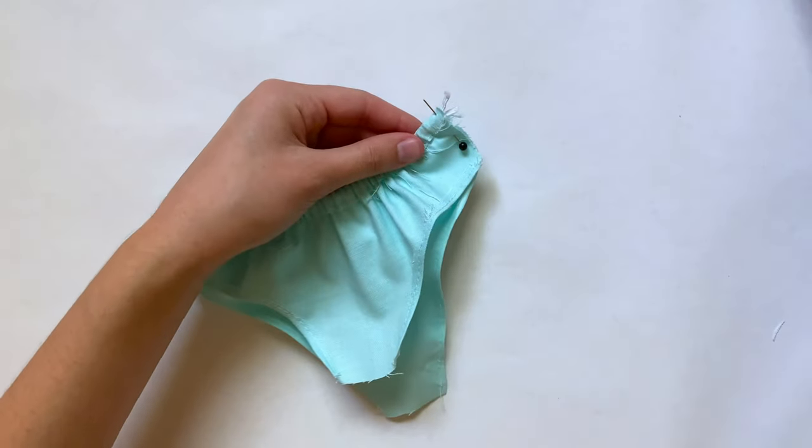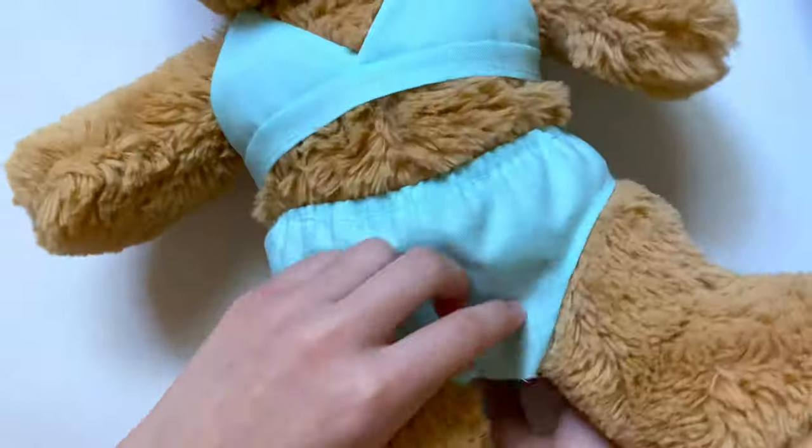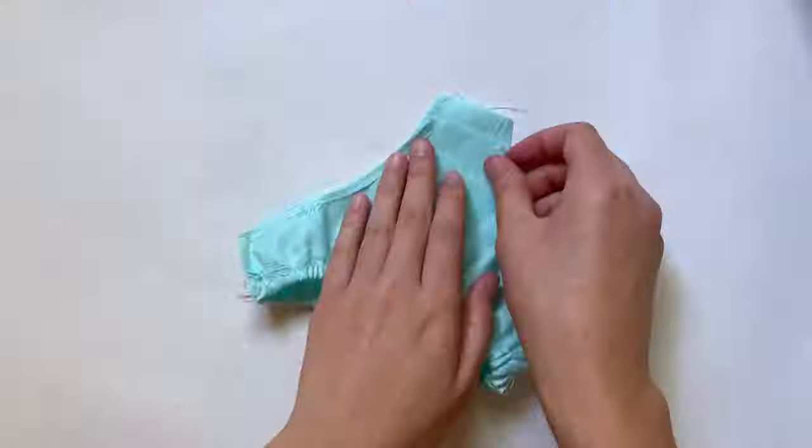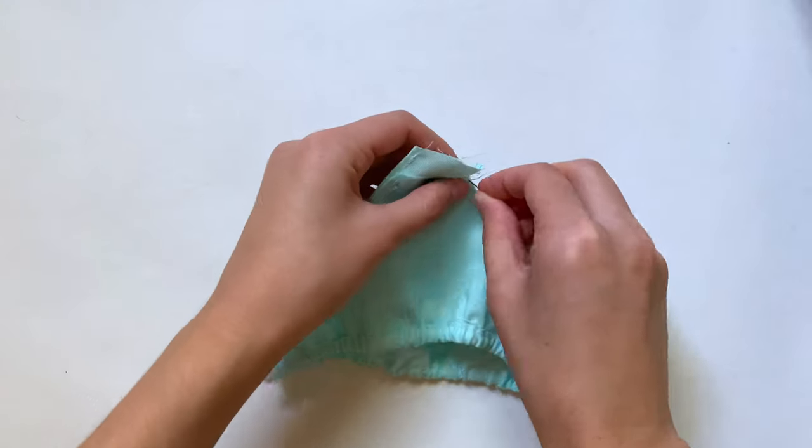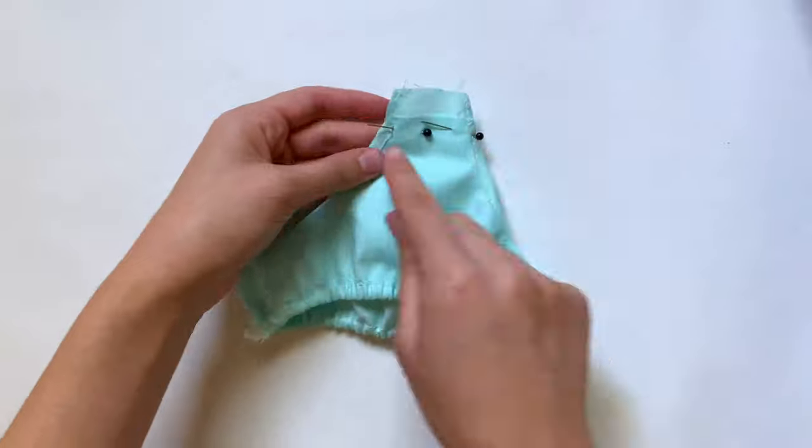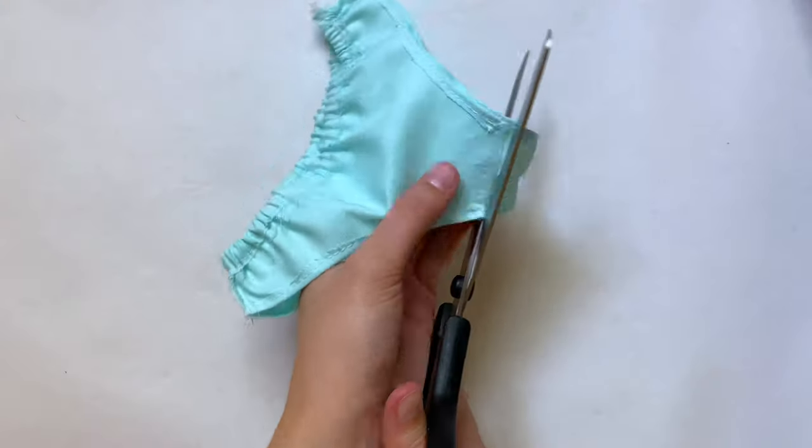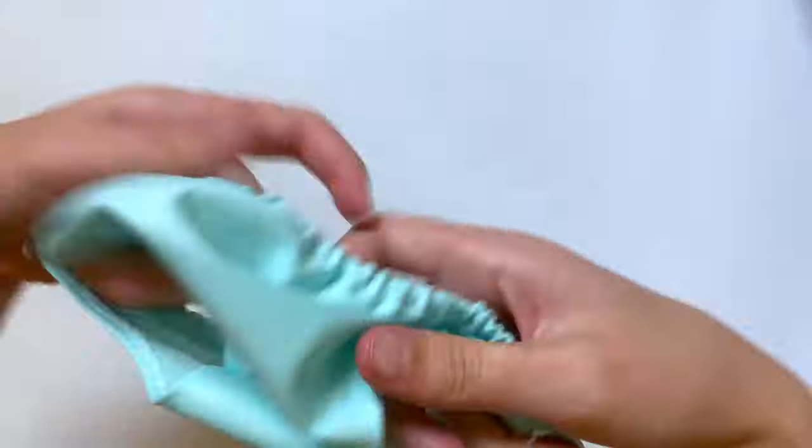At this point I wasn't sure how long I needed the bottoms to be, so I first tried this on my stuffed animal, pulled it up to where I wanted it, and realized I had a lot of extra fabric down there. I'm just sewing a straight line across a little bit higher than I initially planned, and after that I'm gonna cut off the extra. Your swimsuit is basically done.